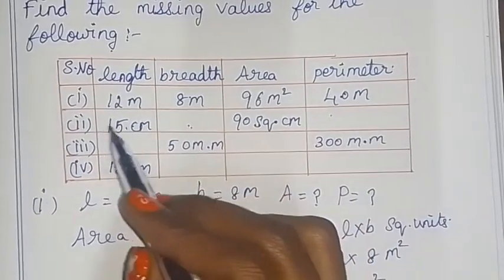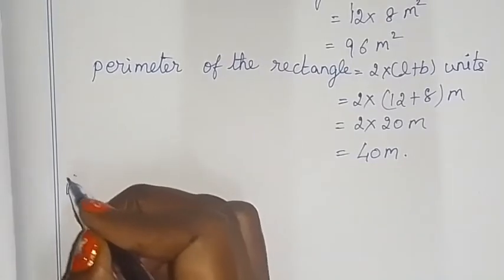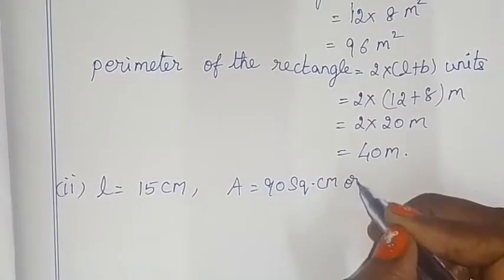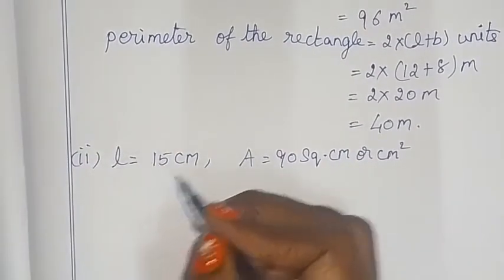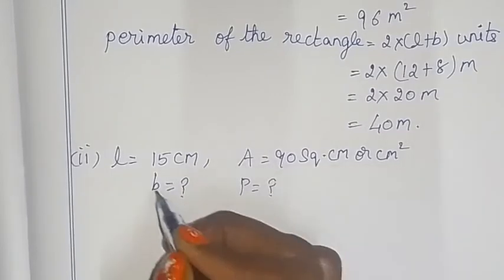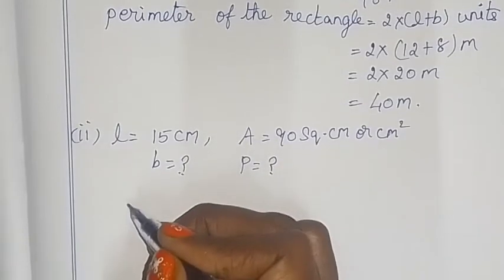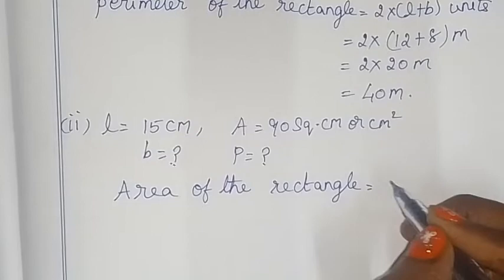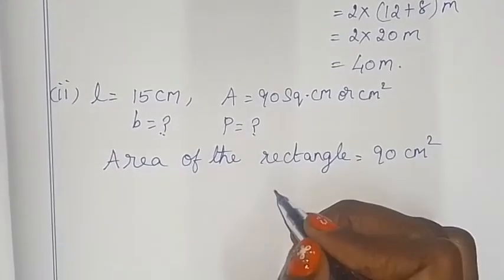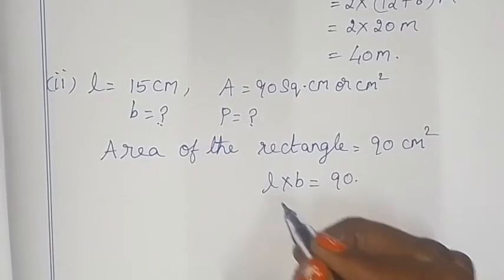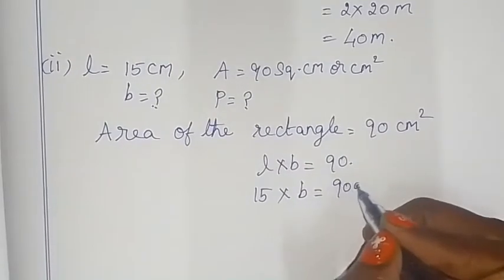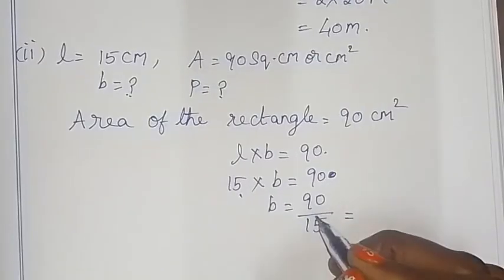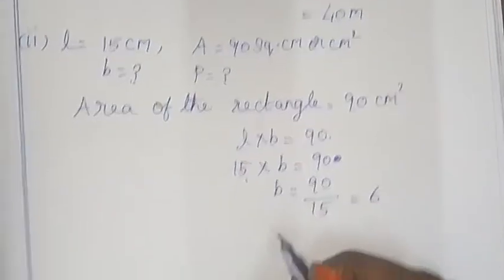In the second rectangle, the length is 15 cm and area is 90 cm². We need to find the breadth and perimeter. Area of the rectangle = length × breadth = 90 cm². So 15 × breadth = 90. Using the 15 times table, breadth = 90 ÷ 15 = 6 cm.